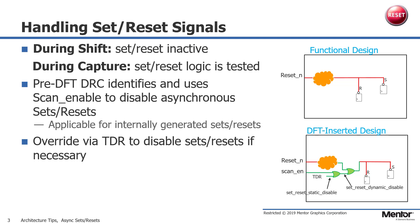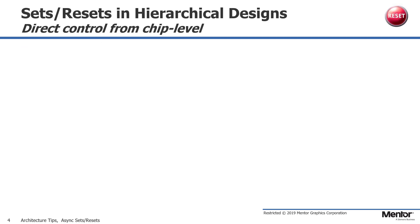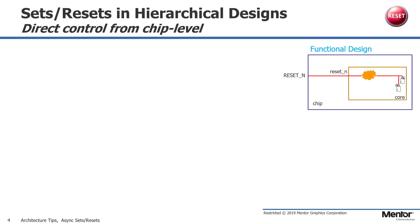A test data register controlled via IJTAG or IEEE 1687 is added to override the asynchronous sets or resets if necessary. Within a chip there may be hierarchical physical layout regions with asynchronous sets or resets. Let us look at the case where the asynchronous sets or resets at the boundary of a physical layout region is connected directly from the chip level pin, as shown in the design marked as functional design.